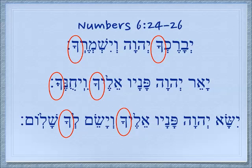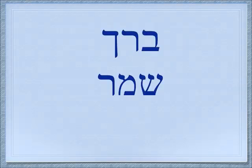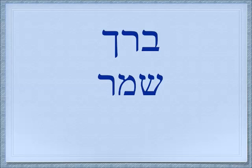For now we're going to look at each of the verbs that appear. The first verb is Yivarechecha. The yod at the beginning means 'he will.' We just learned that the cha at the end means 'you,' and so we have a three-letter root in the middle: barach. Barach means 'to bless' — it comes from the concept of being on your knees.